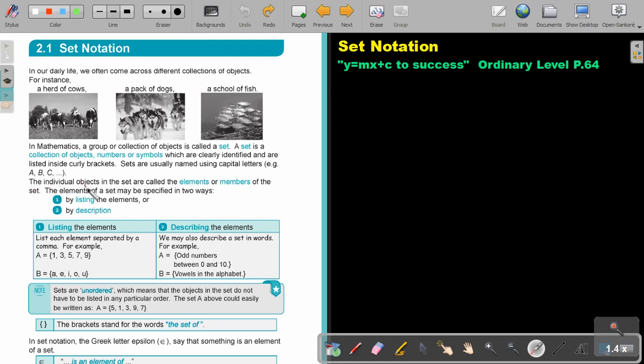The individual objects in the set are called the elements or the members of the set. The elements of a set may be specified in two ways: by listing the elements or by description. Let's look at it.